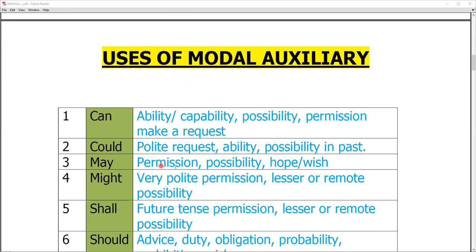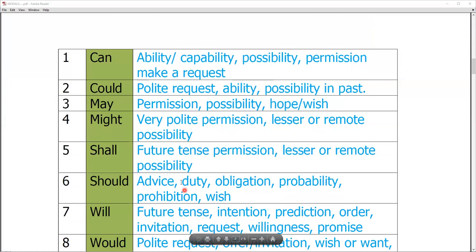May and might work for the same, but there is some condition. May is used for the permission, possibility, hope, and wish. Might is used for very polite permission. Less or remote possibility or a little bit of possibility, we will use might.